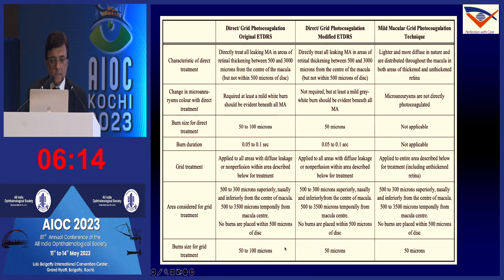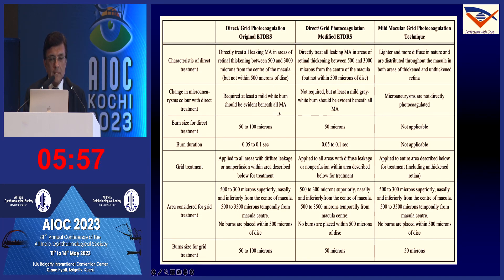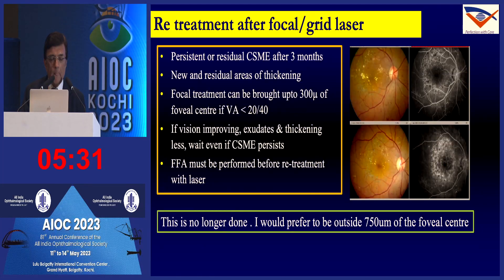A recommended paper in International Ophthalmology Clinics compares direct grid photocoagulation by the ETDRS protocol versus the modified ETDRS protocol versus a mild macular grid. In the ETDRS protocol, the target microaneurysms change color; in the modified ETDRS protocol, color change is not required; and in the mild macular grid, microaneurysms are not targeted at all — instead, the goal is to induce biochemical changes in the retinal pigment epithelium. This is also the basis for subthreshold micropulse laser.